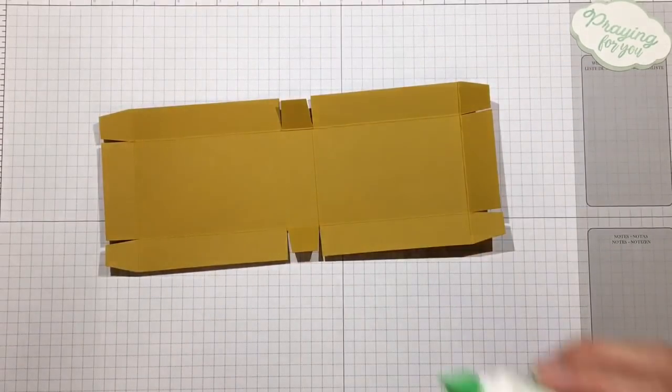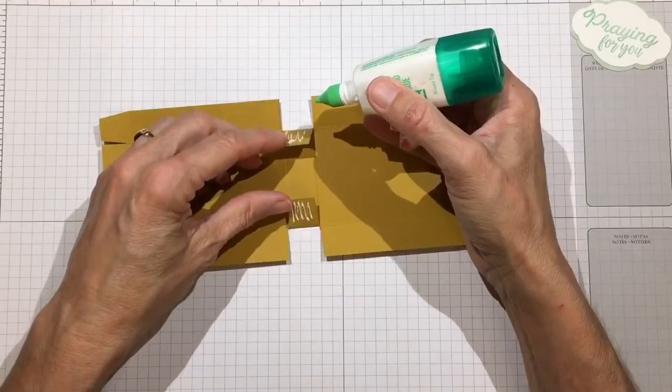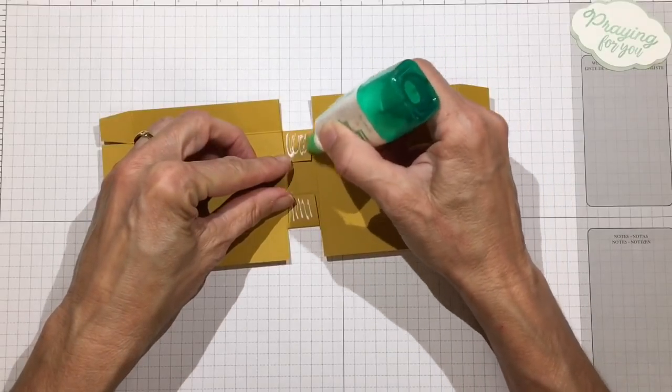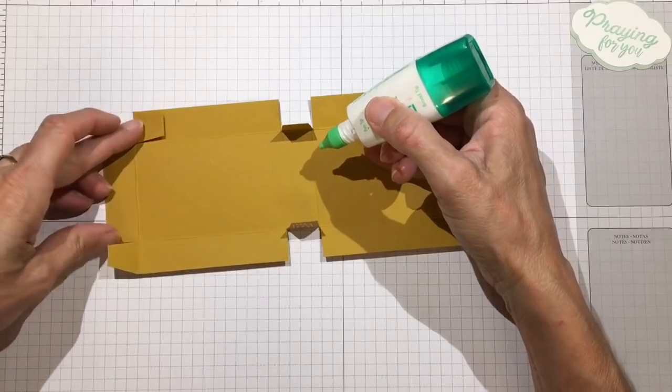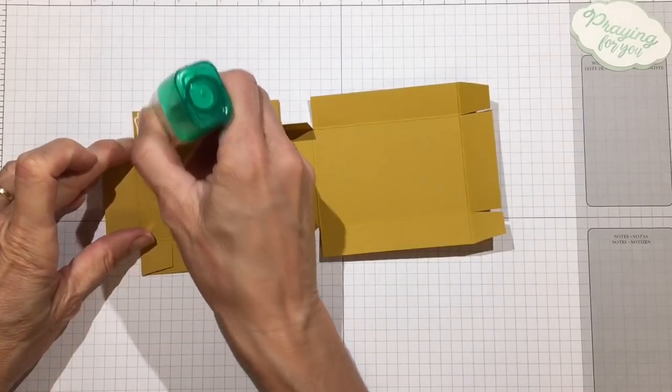Let's go ahead and put the bottom of the box together first. These tabs will go with the bottom side of the box, so put some glue on there and then on the outside of the front tabs put some glue on there as well.